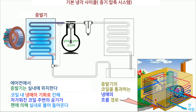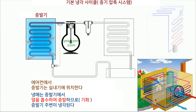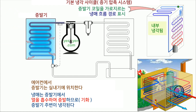The refrigerant flow path across the evaporator coil is as shown. In a refrigerator, the evaporator coil winds alongside the inner storage locations. The refrigerant vaporizes by absorbing heat from the storage locations, thus cooling the same.